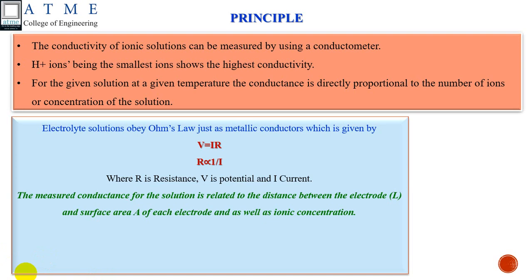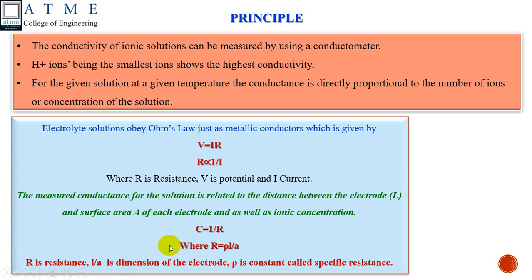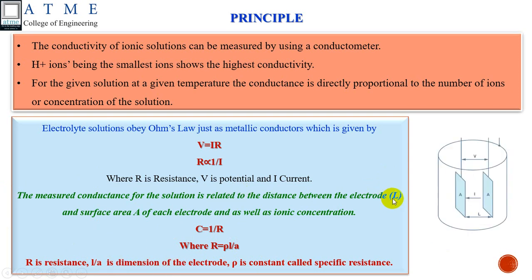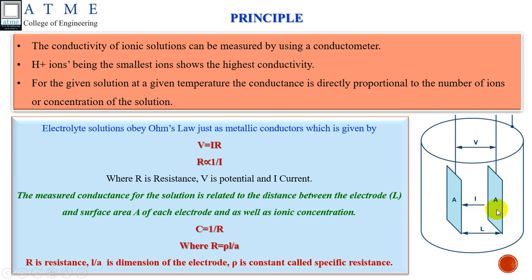The measured conductance of a solution is related to the distance between the electrode foils, L, and the area of cross-section of each electrode, A, in an ionic concentration. The conductance is inversely proportional to R, where R = ρL/A — ρ is a constant, L is the length, and A is the area of cross-section. L/A is the dimension of an electrode. In a typical electrode, the distance is L and A is the area of cross-section.